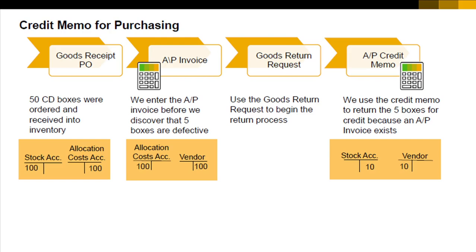Since in this case we were able to create the credit memo by copying the items from the goods return request to the AP invoice, the system finds the same accounts that were used to post the invoice and posts a negative value to them.